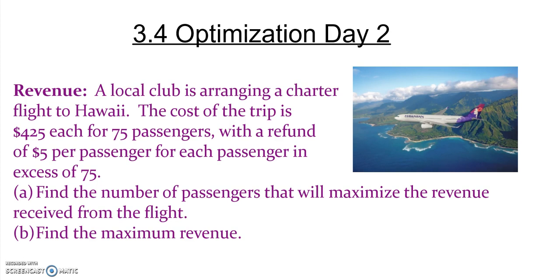So let's go ahead and just jump into this first problem, dealing with revenue. Here we have a local club is arranging a charter flight to Hawaii. The cost of the trip is $425 each for 75 passengers, with a refund of $5 per passenger for each passenger in excess of 75. Part A, find the number of passengers that will maximize the revenue received from the flight, and Part B, find that maximum revenue.